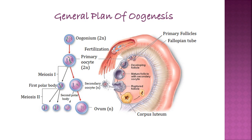The primary oocyte undergoes meiosis first and asymmetrical cytokinesis. Asymmetrical cytokinesis means that cytokinesis gives rise to daughter cells of unequal size. The primary oocyte forms a smaller cell called the first polar body and a larger cell called the secondary oocyte. Both of these cells are haploid with 23 chromosomes.